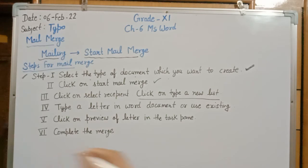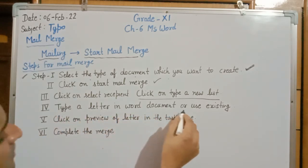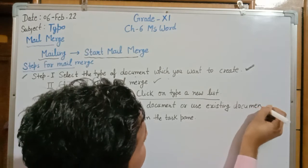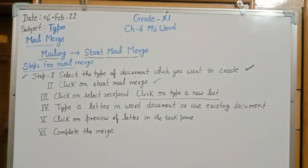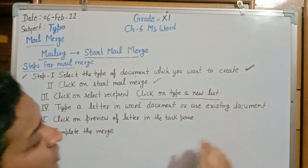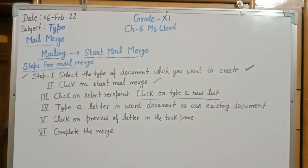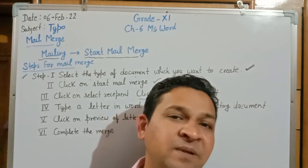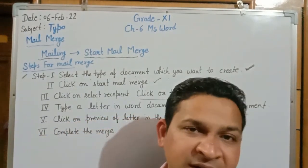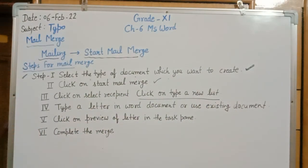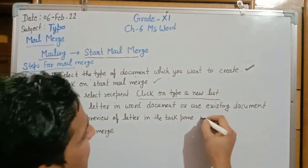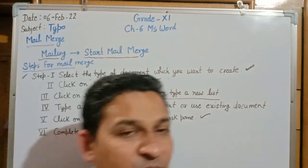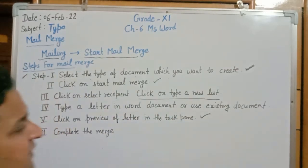Now that the document type and recipient list are prepared, the fourth step is to prepare the actual document. Type the letter in the Word document, or use an existing document if one is available. After the letter is completely prepared, the fifth step is to click on Preview of Letter in the task pane — it will display the structure of the letter so you can check the address, subject, and content.